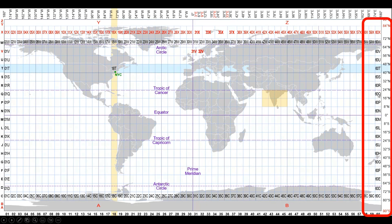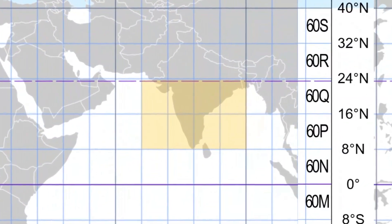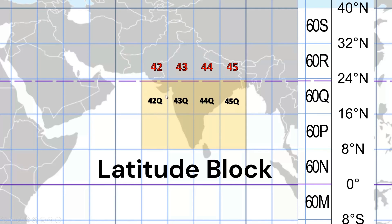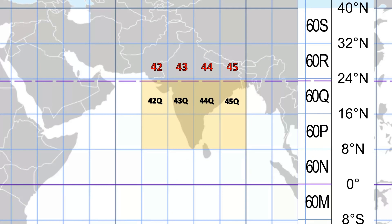The Indian region falls somewhere in the P and Q latitude bands. Let's zoom in on the Indian block. What we see is that zone numbers are 42, 43, 44, and 45. Zone numbers correspond to longitude. We have 42Q as one block — this block is shown here as 42Q — but since this is the northern hemisphere, the zone number remains 42 North. Q denotes only the block: 42Q, 43Q, 44Q, and 45Q. Similarly, below we have P. These are the block numbers.